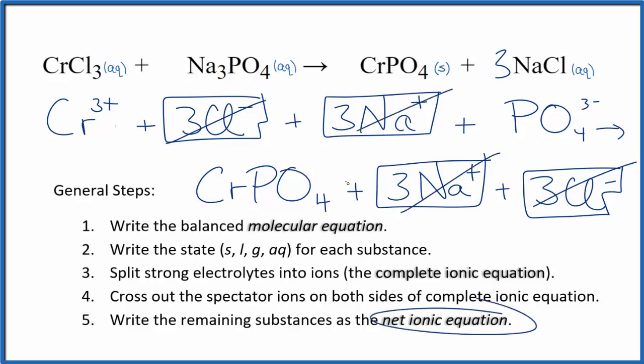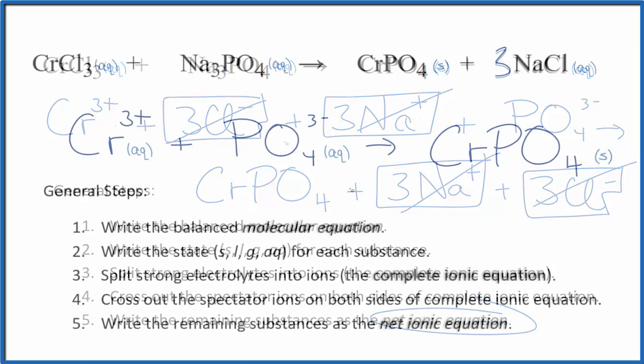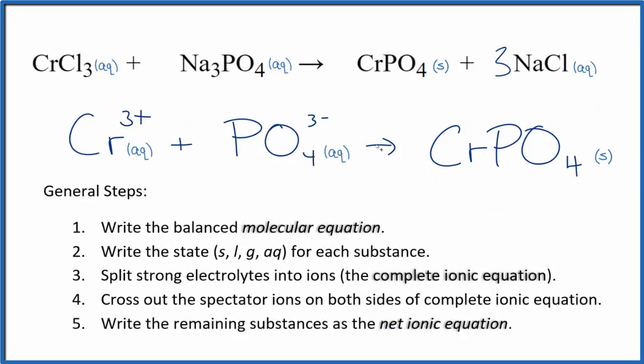And what's left, that's the net ionic equation for CrCl3 plus Na3PO4. I'll clean this up and write the states. So this is the balanced net ionic equation for chromium three chloride and sodium phosphate.